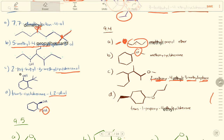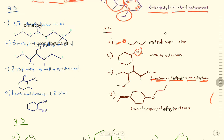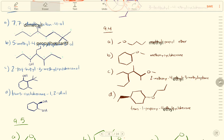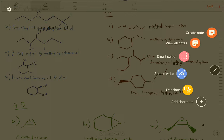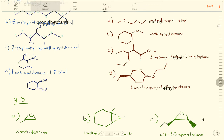This is 2-methyloxirane. The entire structure is 2-methyloxirane. And this one is cis-2,3-epoxyhexane — the entire parent chain is hexane. Follow the IUPAC rules and name it accordingly.